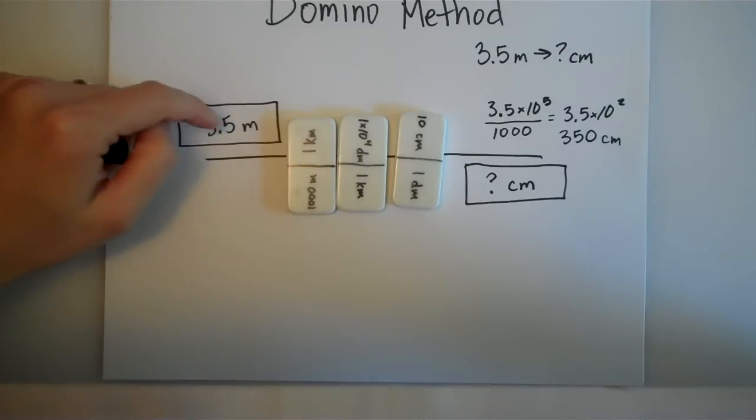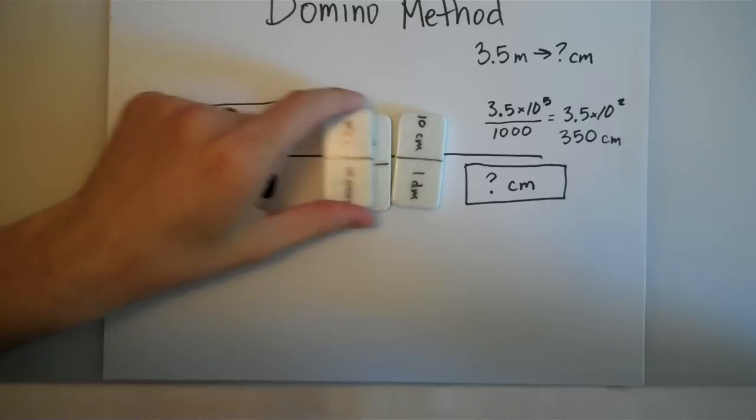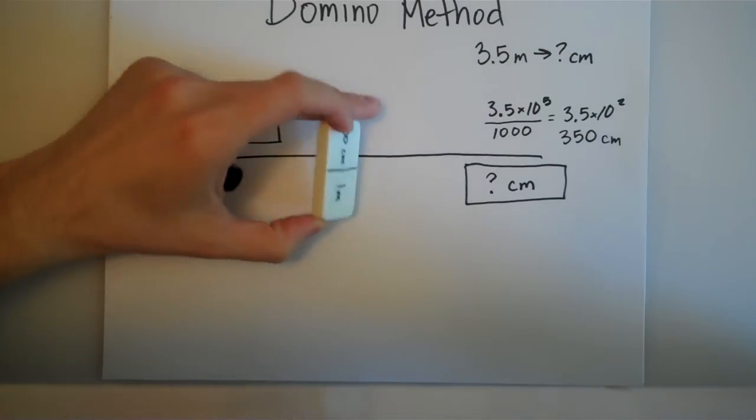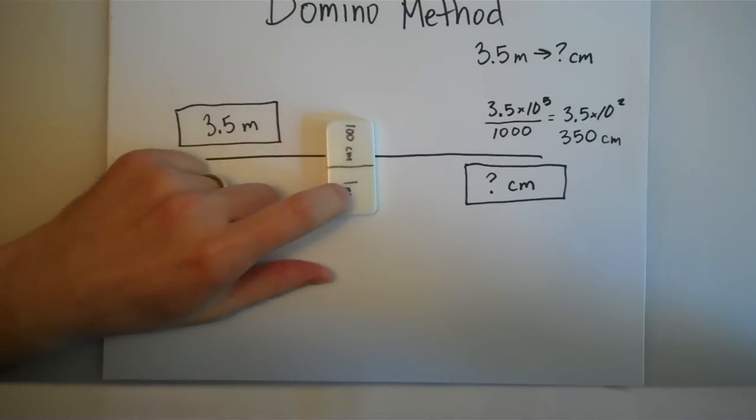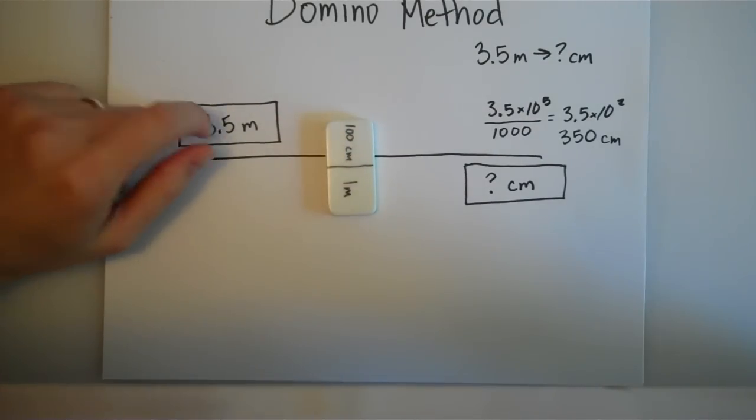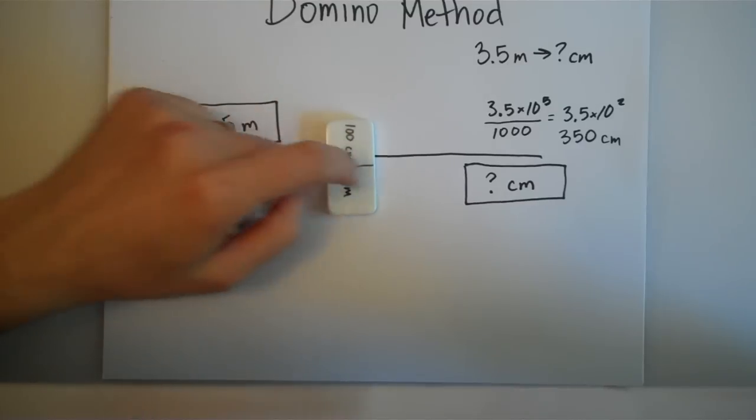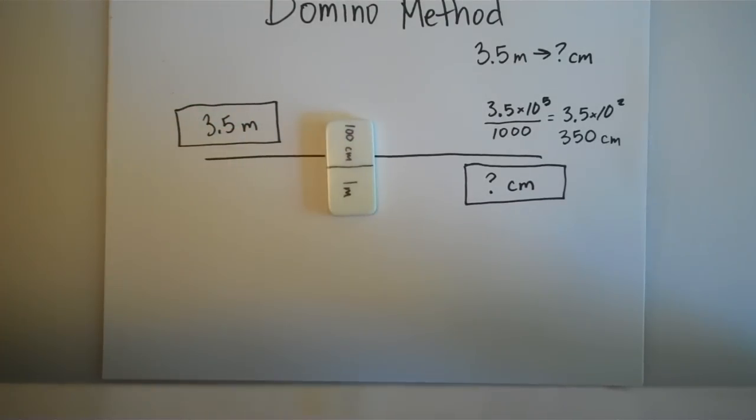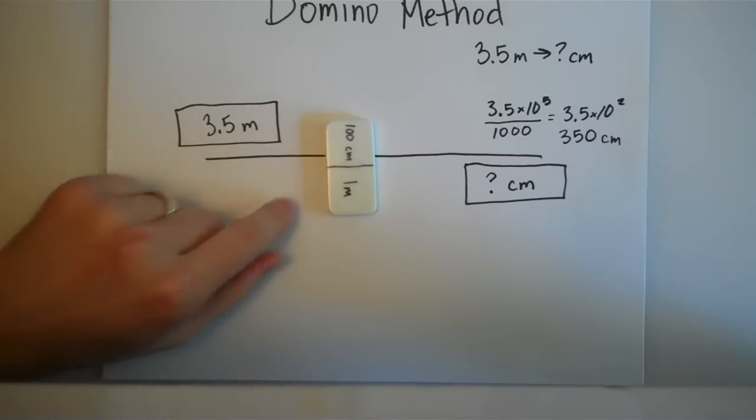Now you're saying, wait, I also know that 1 meter is the same as 100 centimeters. So why do I need all of these dominoes? And in fact, you don't. We could have used this domino right here, which says that 1 meter is 100 centimeters. You'll notice that you get the exact same answer: 3.5 times 100 is 350, divided by 1 is still 350. So 3.5 meters is still 350 centimeters. The number of dominoes doesn't matter - all that matters is that the units actually cancel out.